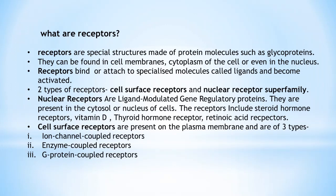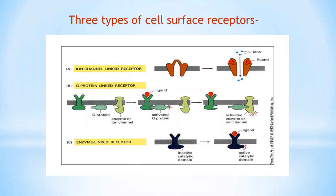There are three classes of cell surface receptors: ion channel-linked receptors, G protein-coupled receptors, and enzyme-linked receptors. Ion channel-linked receptors are also known as transmitter-gated or ionotropic receptors. These receptors are involved in rapid synaptic signaling between nerve cells and other electrically excitable target cells such as nerve and muscle cells. This signaling is mediated by a small number of neurotransmitters. The receptors act like gates whose opening and closing are regulated by ions binding to the receptors, similar to ligand-gated ion channels like the IP3 channel.